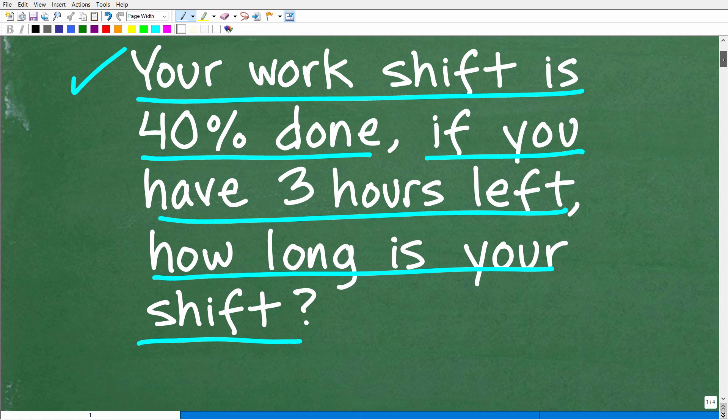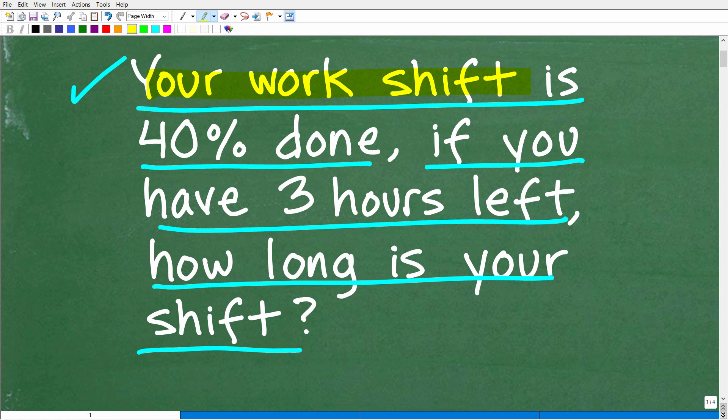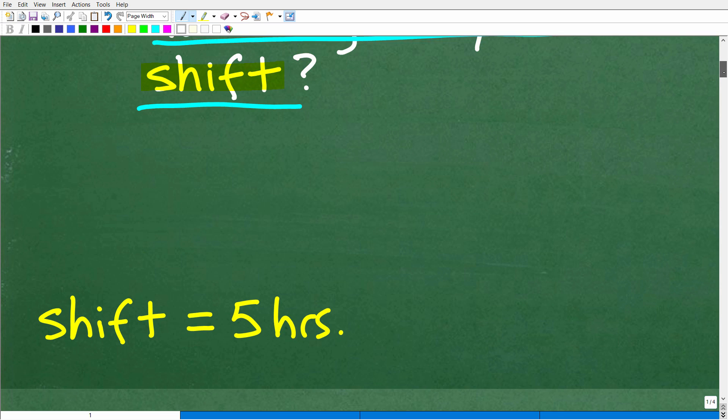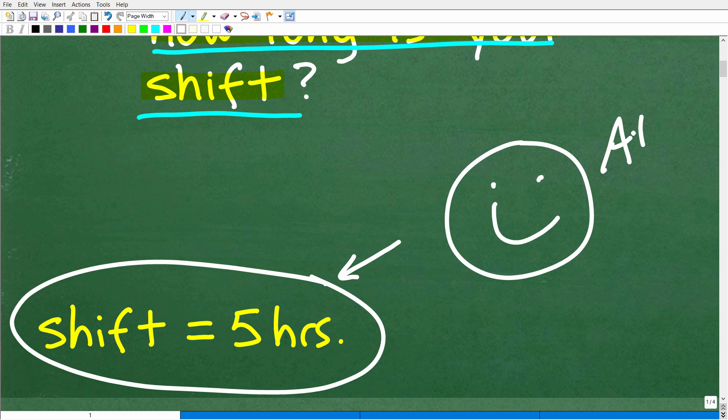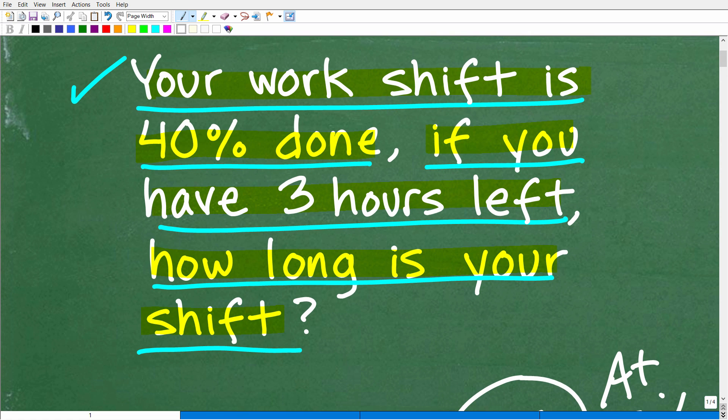All right, so one more time before I show you the answer. Your work shift is 40% done. If you have three hours left, how long is your shift in hours? And the correct answer is five hours. That is how long your entire shift is. So if you got this right, let's go and celebrate by giving you a nice little happy face and a plus a 100% and multiple stars. So you could brag to your friends and family that indeed you are a certified professional expert in the area of solving percent math word problems.